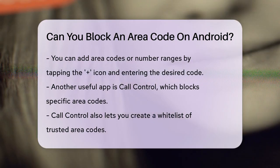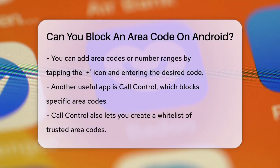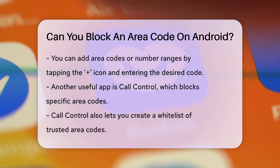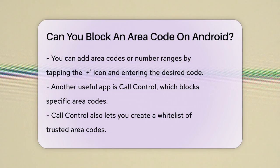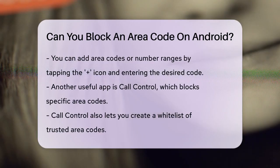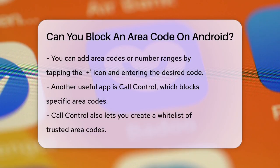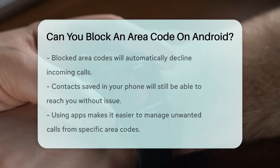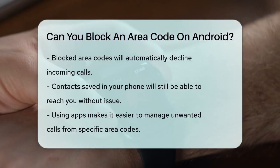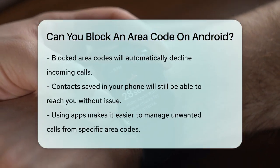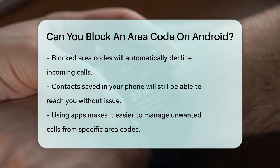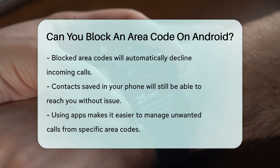Another app that can help is Call Control. This app allows you to block specific area codes and even set up a whitelist of approved area codes. For example, you can block all incoming calls except for a small list of area codes that you trust. These apps ensure that any incoming calls from the blocked area codes are automatically declined and you won't receive calls from those numbers.